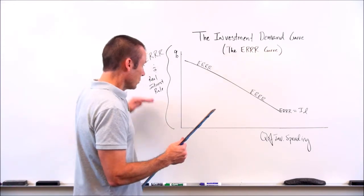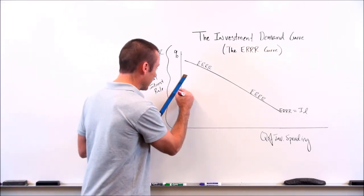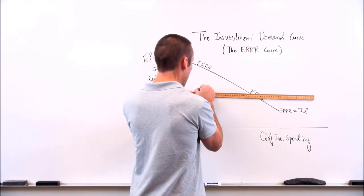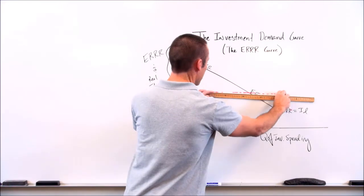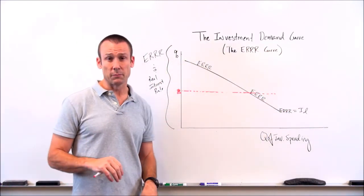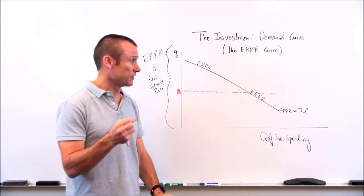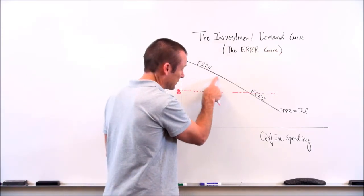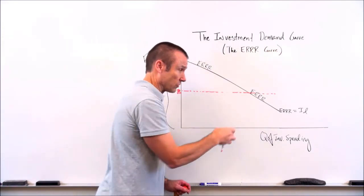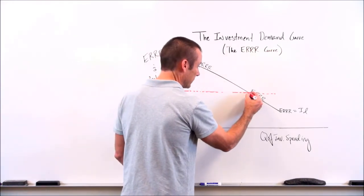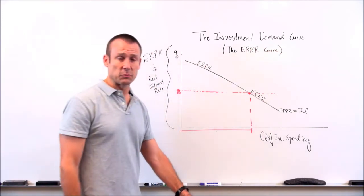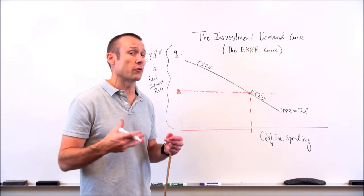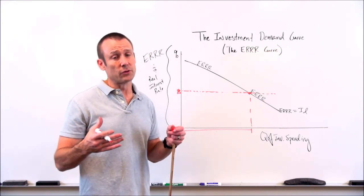I'm going to look at that 8% on the graph and draw a little dashed line right there. That interest rate is the cost of doing a business project. The expected real rate of return is the benefit of the investment project. With that said, which projects am I going to do? I'm going to do those projects that have an expected real rate of return greater than or equal to the interest rate. So I will end up doing this amount of investment spending — all those projects where the expected real rate of return is greater than or equal to the interest rate.